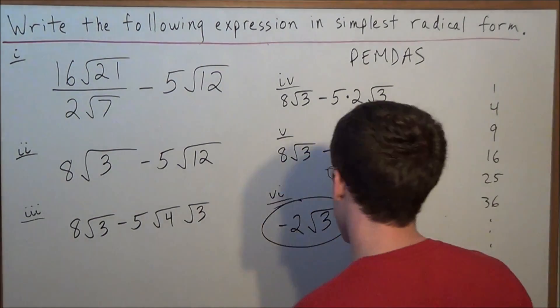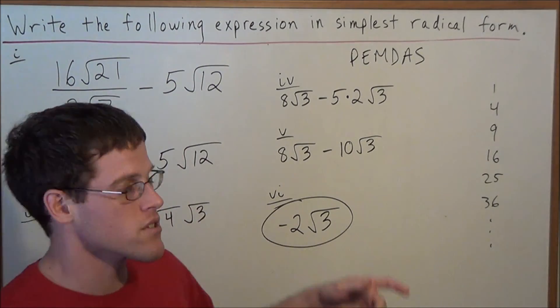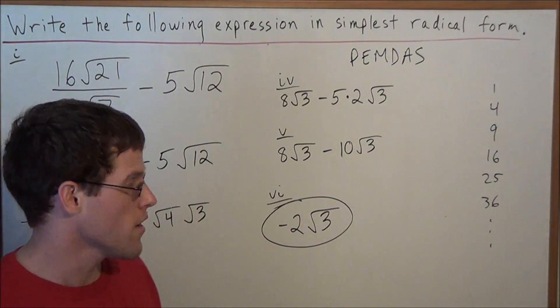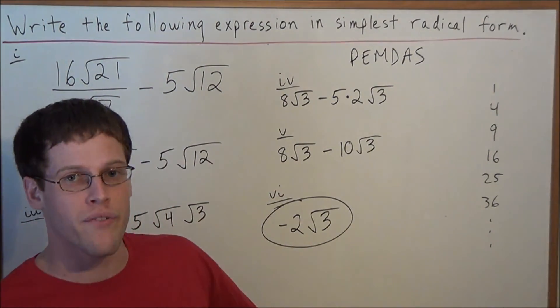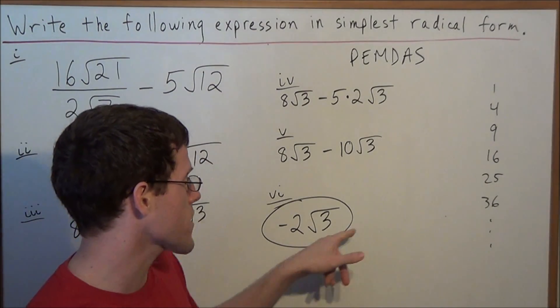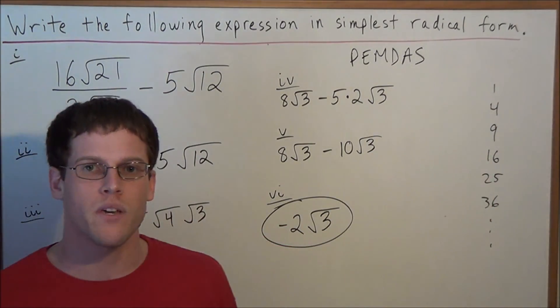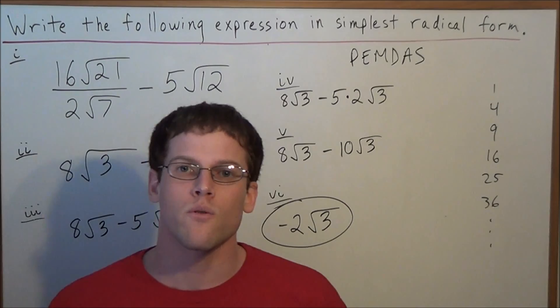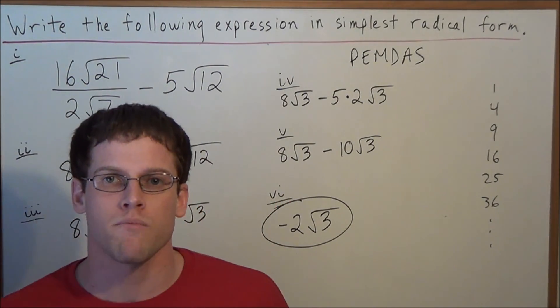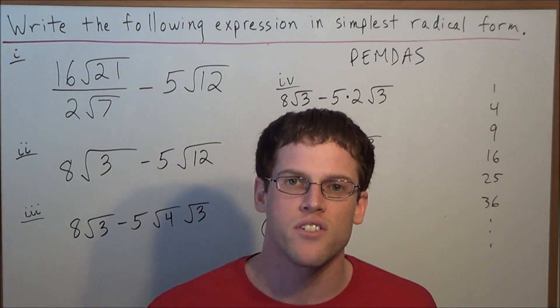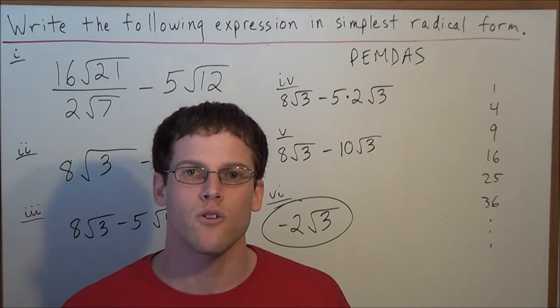Simplest radical form, all that means is that the number under the radical cannot be broken down any further into perfect square factors. Notice the only perfect square factor of 3 is 1, so that tells us we can't go any further. This is going to conclude this simplifying radicals with mixed operations video. Thank you all for watching, and I hope that this was helpful.